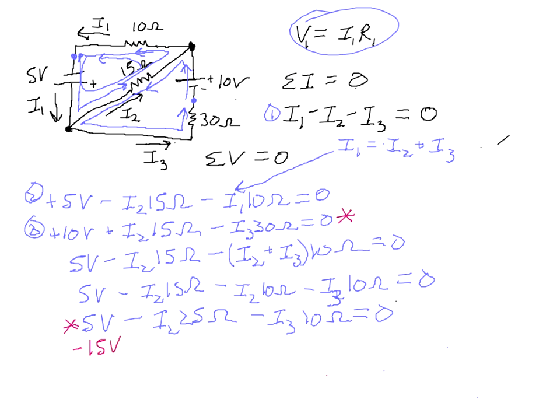So I'm going to multiply the bottom equation by negative 3 and add it to equation 3. If we multiply by negative 3, we get negative 15 volts plus I2 times 75 ohms plus I3 times 30 ohms equals 0. And now when you add that equation to equation 3, we get minus 5 volts. Let me check the sign here. If I multiply this equation by negative 3, then that should be negative 15. These should be positive. There, that's better.